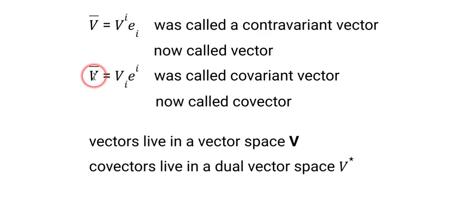Then when you see it written in a linear combination like this, they call that a covariant vector, which once again, it's not a covariant vector. It's a vector expressed with covariant components. Now they just call it a covector. And then you've got this math speak that vectors live in a vector space and covectors live in a dual vector space.